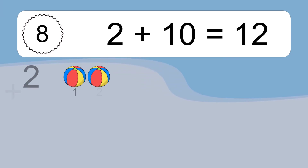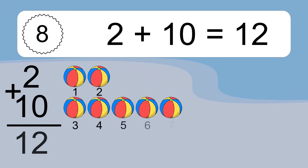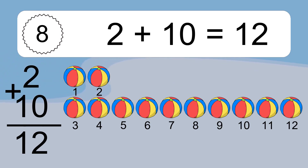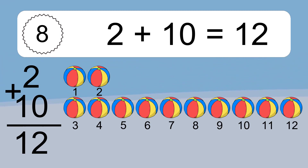2 plus 10 equals what? 2 plus 10 equals 12. Let's count it. 1, 2, 3, 4, 5, 6, 7, 8, 9, 10, 11, 12.